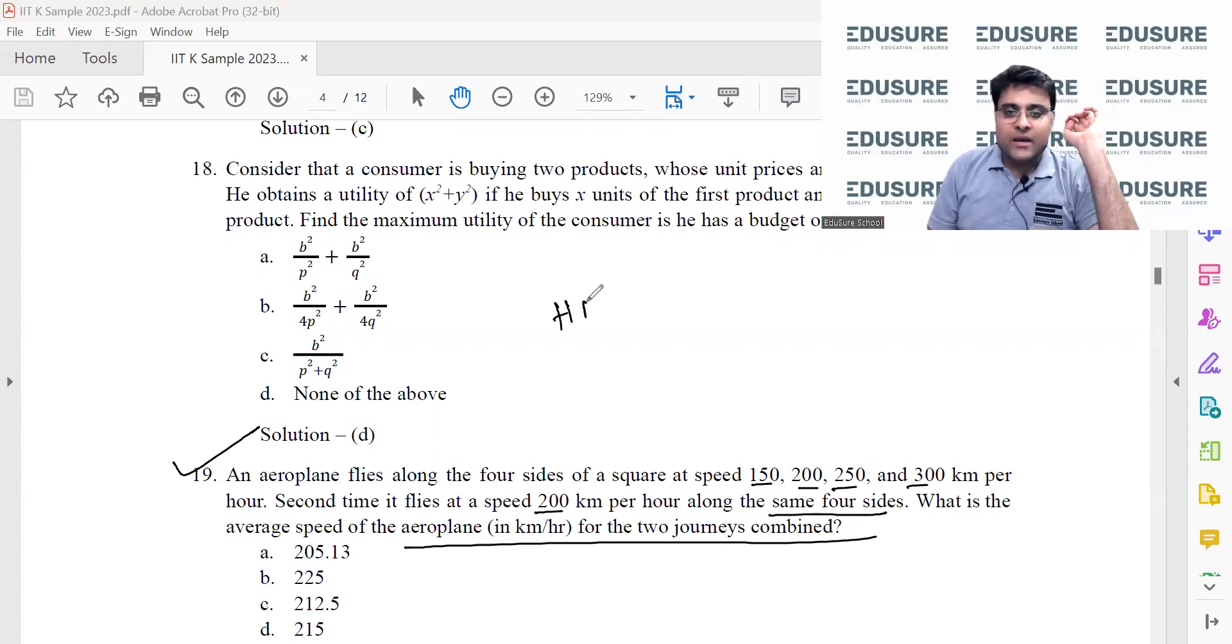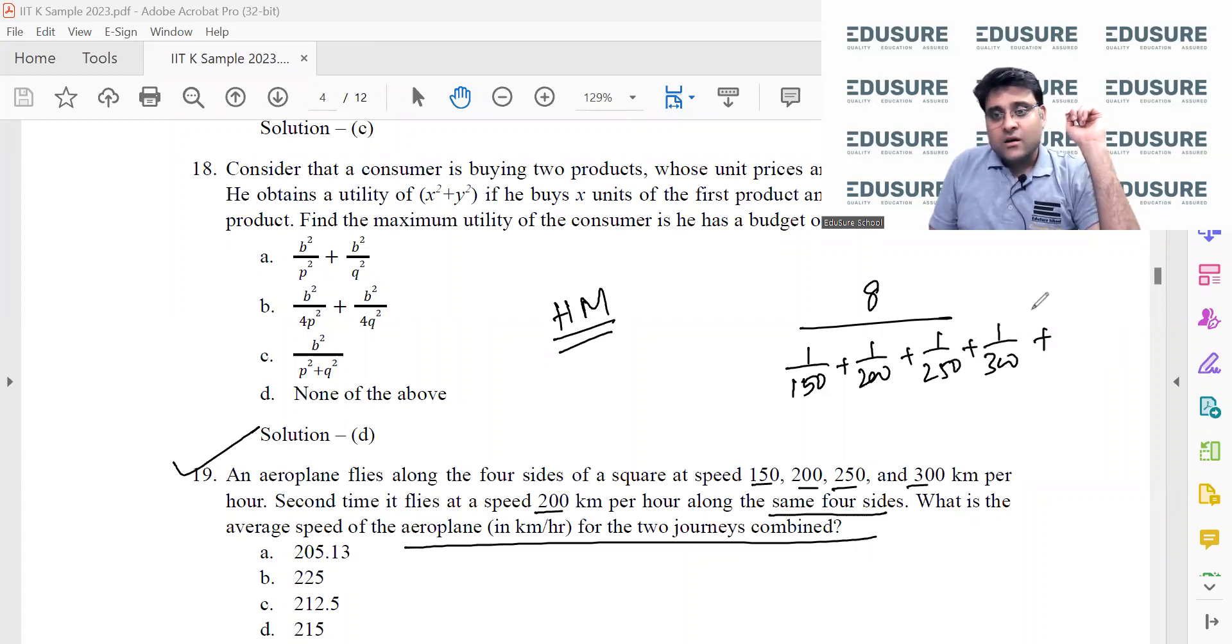So let each of the sides be d. I am considering eight instances: first instance 150, second 200, third 250, fourth 300, and then four sides of the square each side at 200. So 8 divided by (1/150 + 1/200 + 1/250 + 1/300 + 4/200).